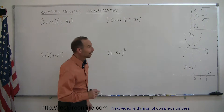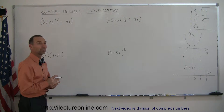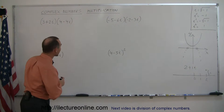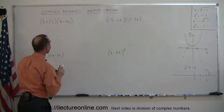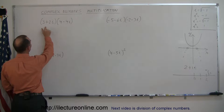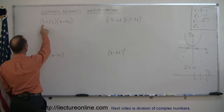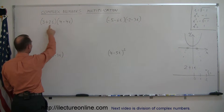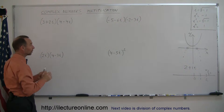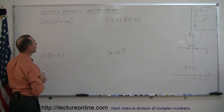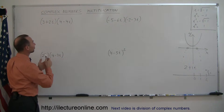Welcome to iLecture Online. In the next segment, dealing with complex numbers, we're going to learn how to multiply them. Here are four examples, four multiplications. Remember that every complex number typically has a real part and an imaginary part. Here's an example where the complex number only has the imaginary part, not the real part, but it doesn't matter. We need to know how to multiply any combination of them.